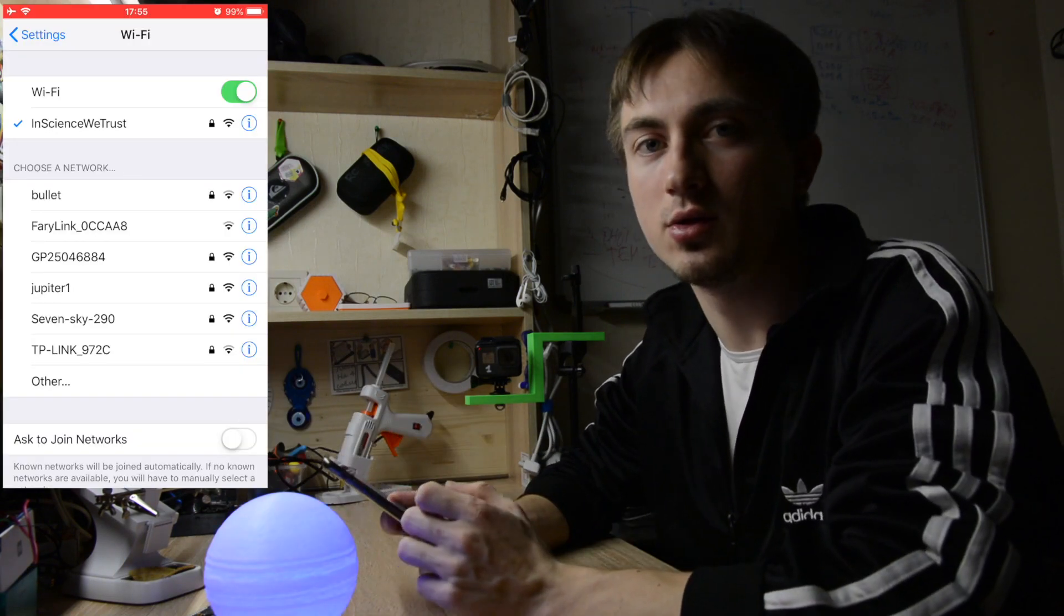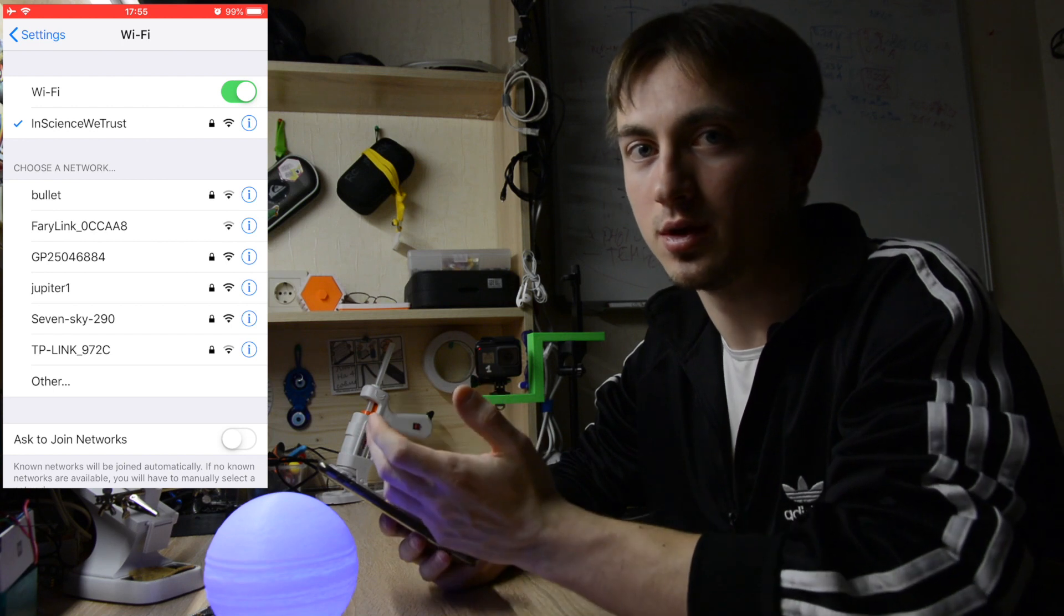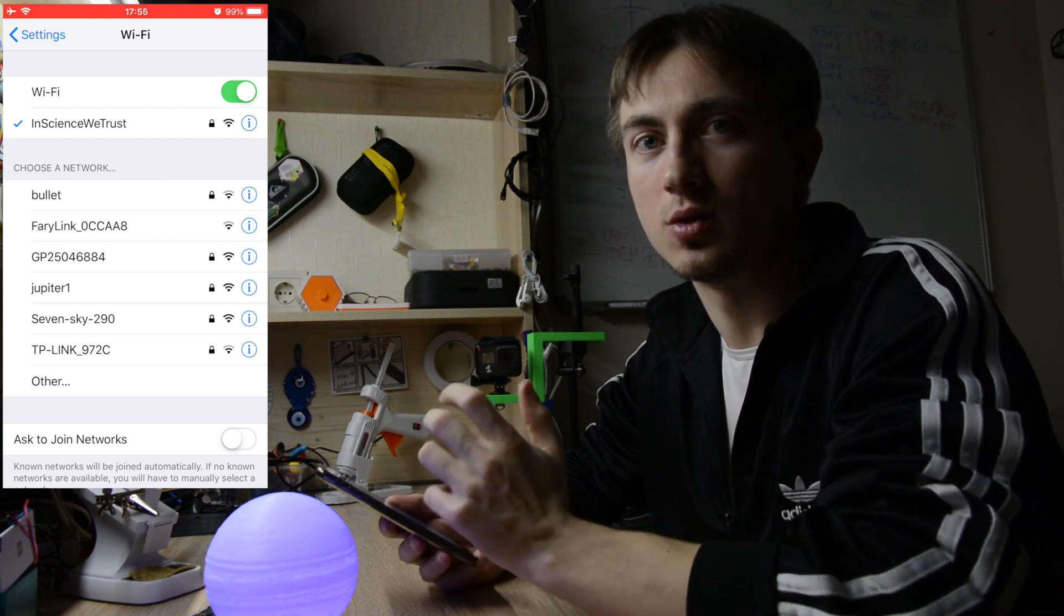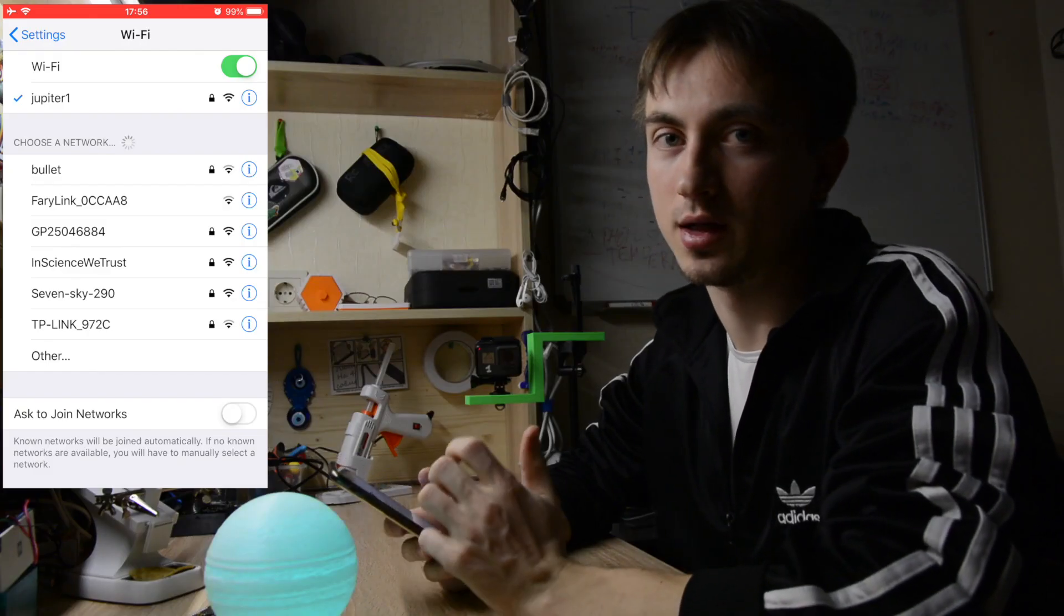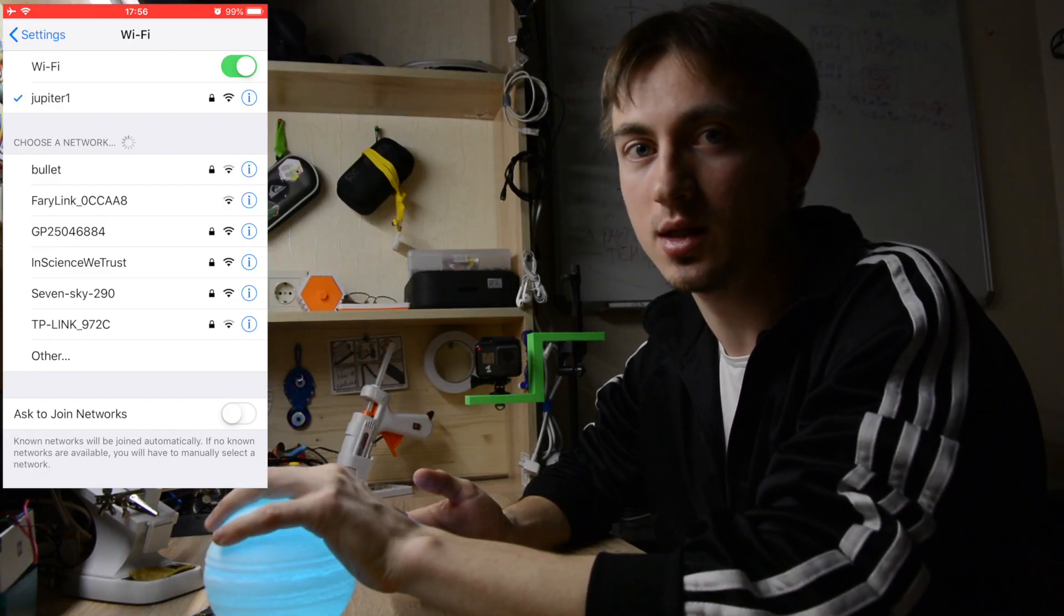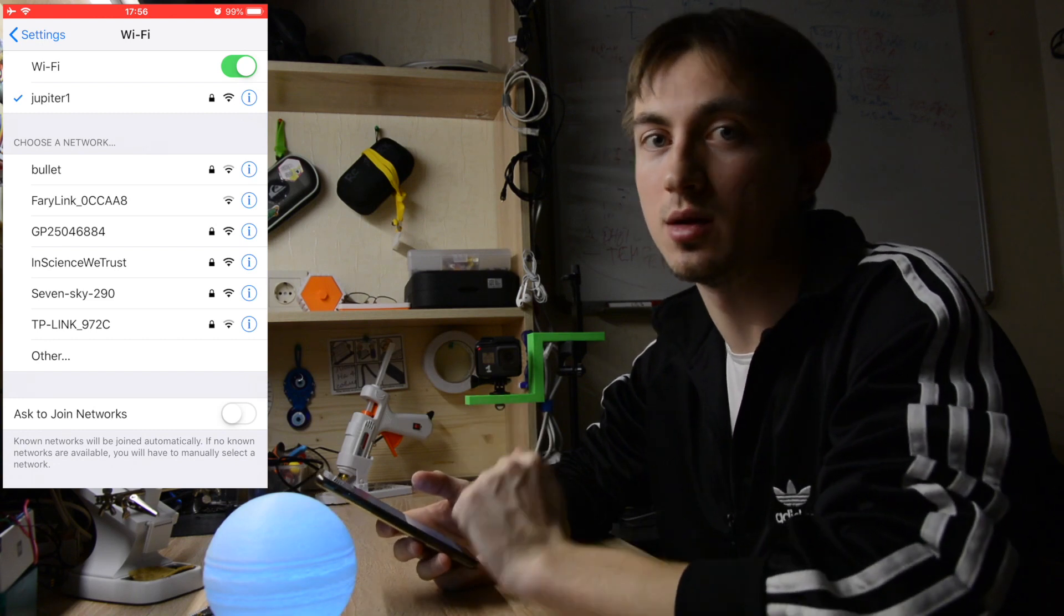First of all I need to connect to the access point. I gave it a Jupiter 1 name. One eternity later... Great, finally I've managed to connect to the access point of this lamp. And now let's move to the browser.